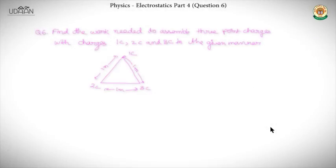The next question is about electrostatic potential energy. We learned in theory that electrostatic potential energy occurs in pairs. To calculate for n charged particles, there will be nC2 combinations. You sum all of them to find the total electrostatic potential energy.